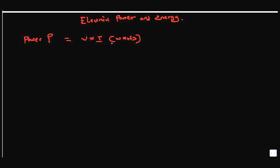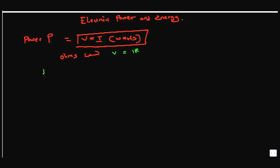Let's obtain a different expression for power. From Ohm's Law we know that V = IR. So power equals V times I, and if we replace V with IR, what we get is I times I times R — that is I²R.